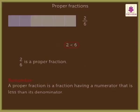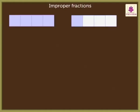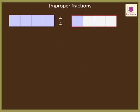Now, let us understand improper fractions. Annie has two more grids. In the first one, she has coloured all the four parts of the grid — that is, she has coloured the entire grid. We can write it in fraction as four upon four.